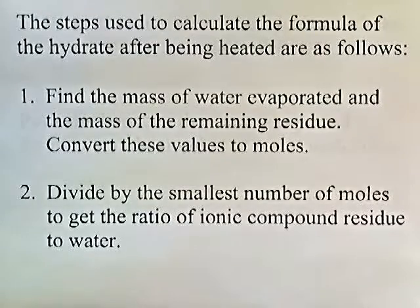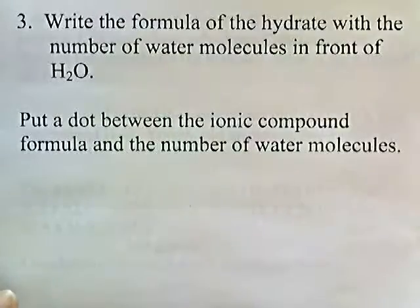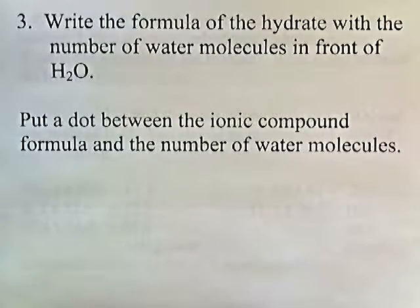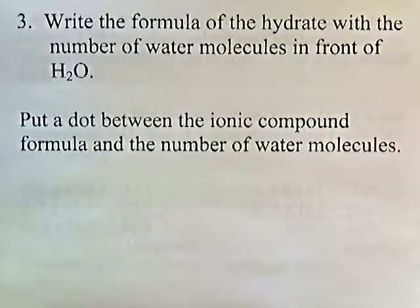The second step would be to divide by the smallest number of moles to get the ratio of ionic compound residue to water. And then you write the formula of the hydrate with the number of water molecules in front of the H2O. You put a dot between the ionic compound formula and the number of water molecules.